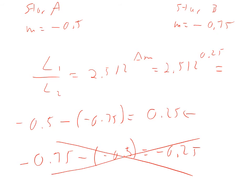How do you raise something to the 0.25 power? There's a button on the calculator. You do 2.512 raised to the 0.25, and that turns out to be 1.26 times brighter.